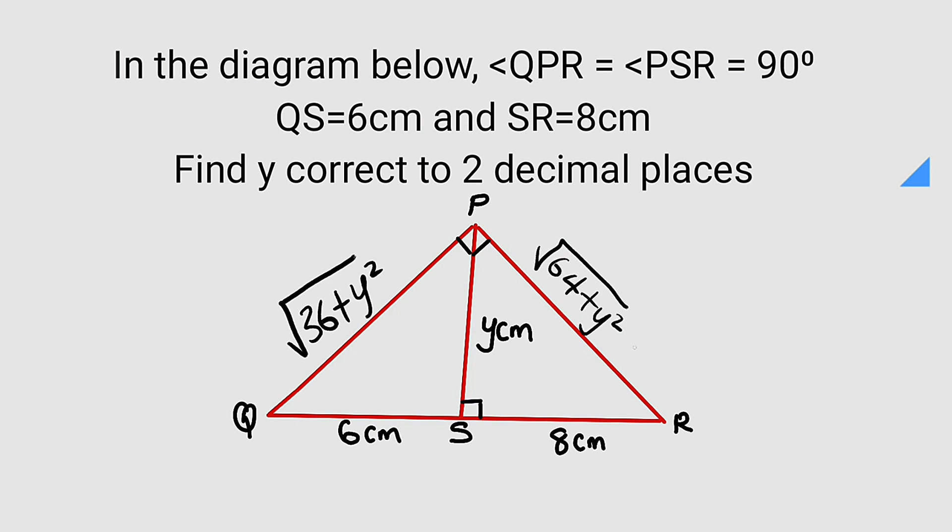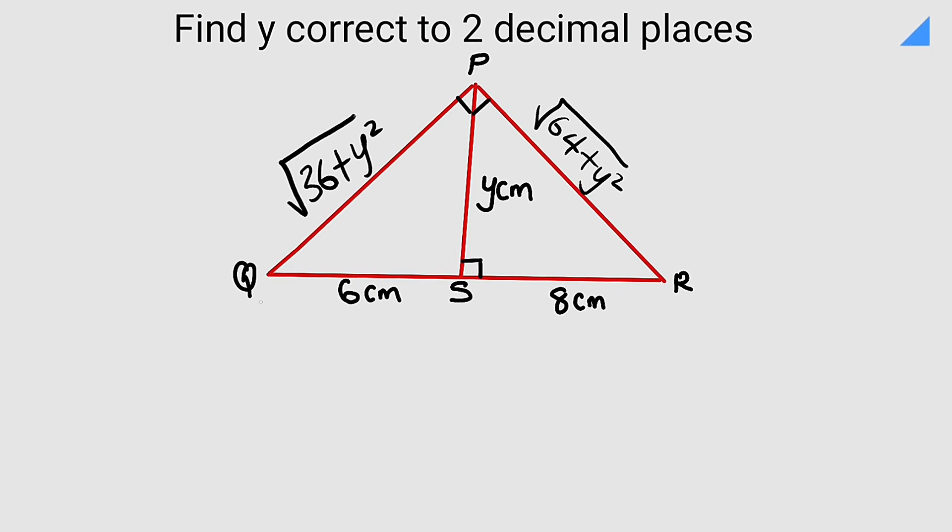You should observe that the length of QR, that is from here to here, is going to be 14 because 6 plus 8 is 14. So we can say that this is 14 from here down here. And now we are free to also apply another Pythagorean theorem because we have another right angle triangle right here.